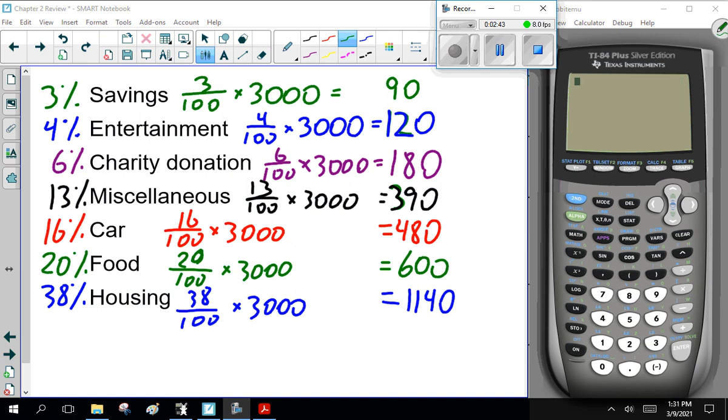Okay, ladies and gentlemen, welcome back. So, I got $390 for miscellaneous, $480 for the car, $600 for food, and $1140 for housing. Now, that should be a total of $3,000 for Leroy's monthly budget. I want you to double-check that. I didn't, I got $3,000, but I'm getting old. Check that, please. Last chance to check it, and then we'll go on.